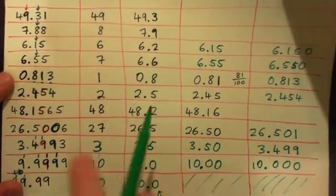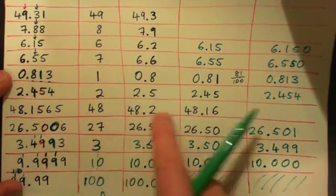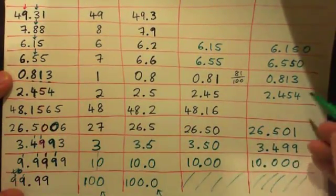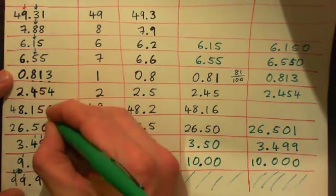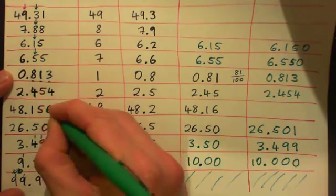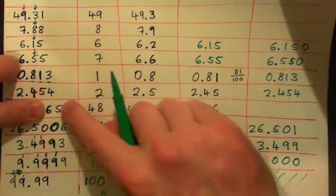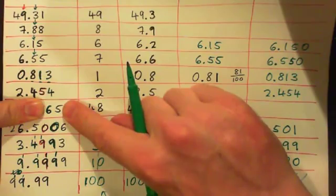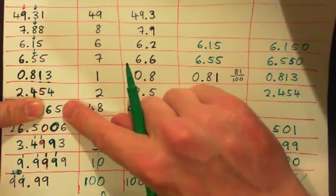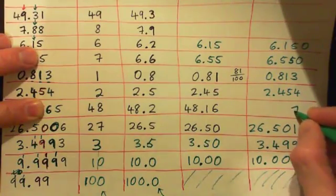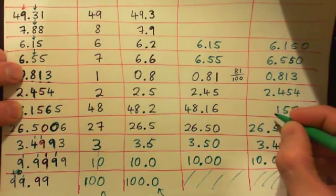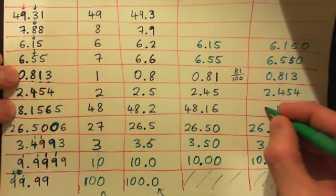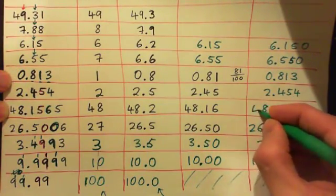And what are we missing? I guess I missed this one — 48.1565 to the nearest thousandth. Can you do that? This is the digit we're looking at: tenths, hundredths, thousandths. What comes after the six? Five. So do you round up or down? Round up — so seven. Fill in the rest: five, one, decimal point, eight, four.